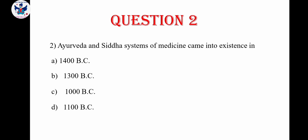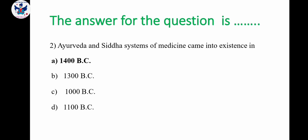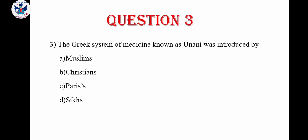Question number 2. Ayurveda and Siddha systems of medicine came into existence in: A. 1400 B.C., B. 1300 B.C., C. 1000 B.C., D. 1100 B.C. The correct answer is option A, 1400 B.C. The Ayurveda and Siddha systems of medicine came into existence in the year 1400 B.C.